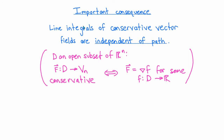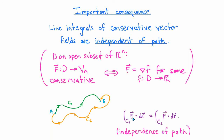To say that the line integral of a vector field is independent of path means that for any two piecewise smooth curves C₁ and C₂ connecting the endpoints, the integral of F·dr over C₁ equals the integral of F·dr over C₂. The fundamental theorem tells us that if F is the gradient of a scalar field f, then both integrals only depend on the endpoints — that is, they are path independent.